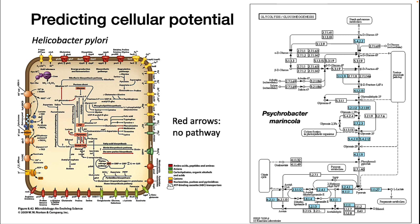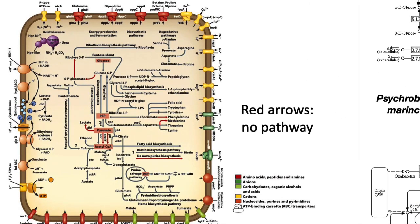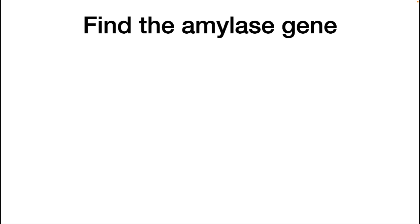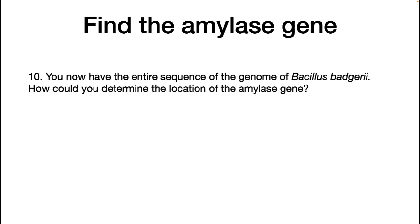Here are more examples of predictions you can make. Look at the transporters in Helicobacter pylori — it also has the TCA cycle and ATP synthase, so it predicts that it probably is a respiratory organism. Also note the urease enzyme that will make ammonia and protect the microbe at the low pH of the stomach. Now that you have the entire sequence, how could you determine the location of the amylase gene using KBase?